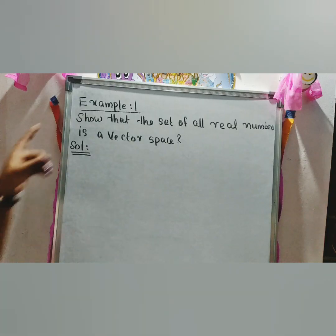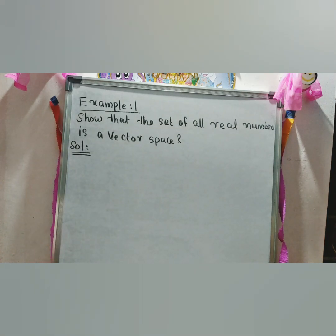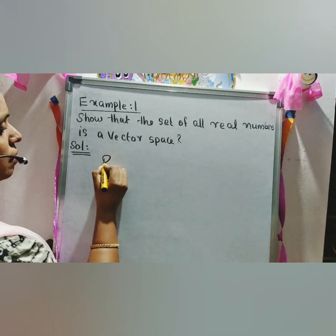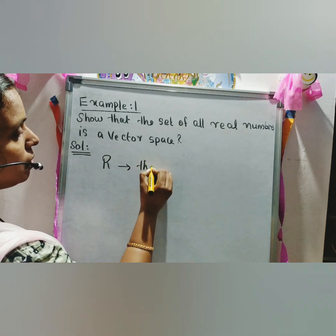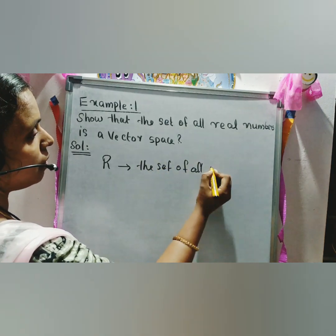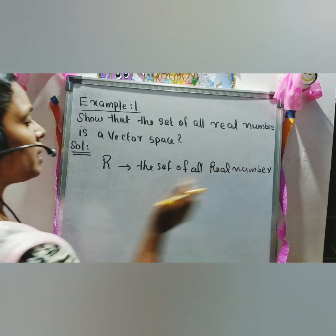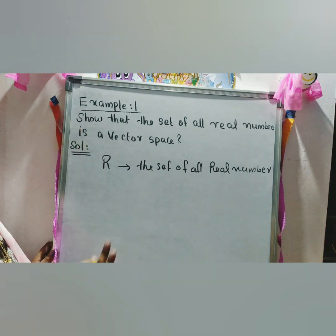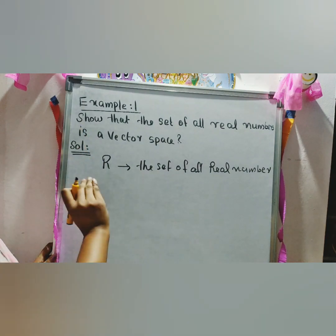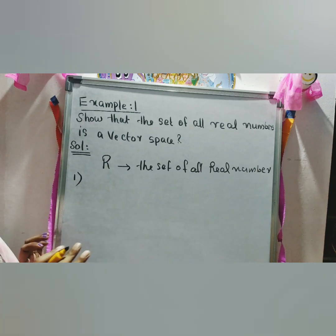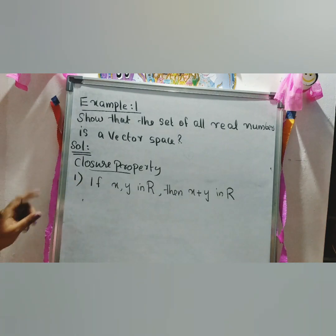Example 1: Show that the set of all real numbers is a vector space. The set of all real numbers is denoted as capital R. If R satisfies the ten properties of a vector space, then R is a vector space. We check the first property — the closure property under vector addition: if we take any two elements in R, then their sum is also in R.